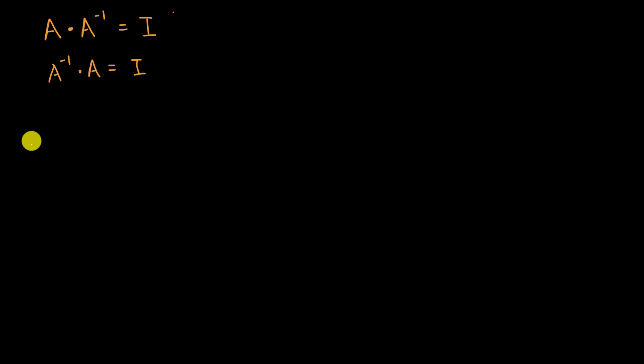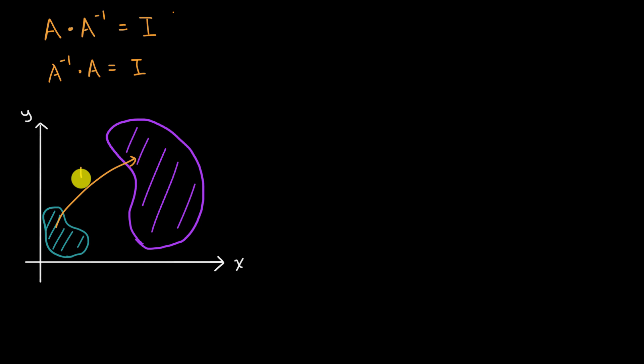And so another way to think about it, if I take some type of region in the coordinate plane, so this is my x-axis, this is my y-axis. And so let's say my original region looks something like this, right over here. And I apply the transformation A, and I get something that looks like this. So if I apply the transformation A, it takes me from that region to that region.